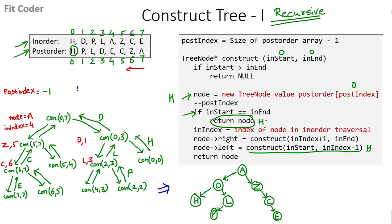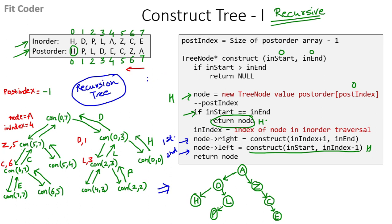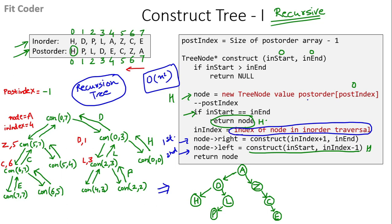By simply drawing the recursion tree you can visualize how a recursive program is running. The branches in the recursion tree determine how the recursion was performed — the first recursive call was made for the right of the node and the second recursive call was made for the left. The time complexity of this program is O(n²), because at every step we are searching the index of the node in the inorder traversal, and this search operation is expensive.